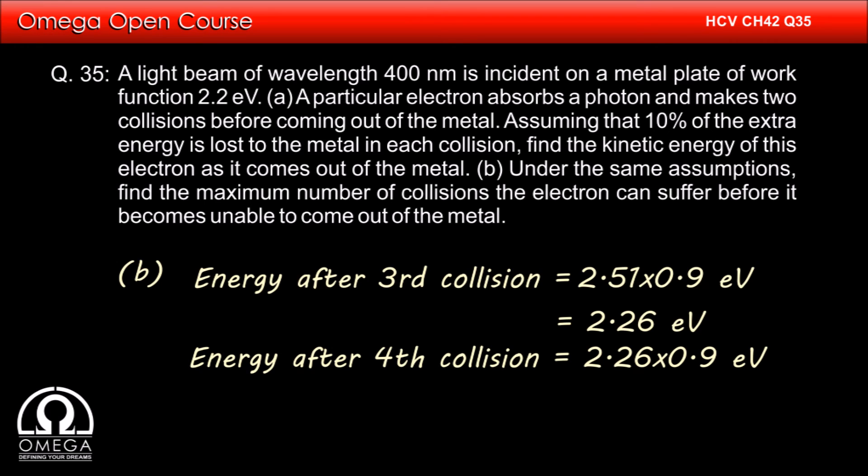Energy of the electron after the fourth collision is 2.26 times 0.9, that is 2.03 eV. This energy is less than the work function of the metal, therefore the electron will become unable to come out after the fourth collision. This is our answer.